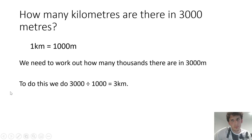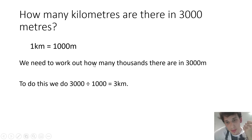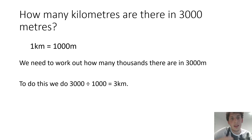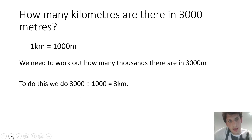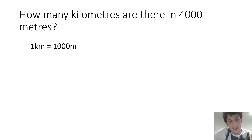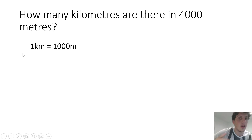Here I have 3,000 meters. One kilometer is equal to 1,000 meters, so to work out how many kilometers there are in 3,000 meters, we do 3,000 divided by 1,000, which equals 3. So in 3,000 meters, there are 3 kilometers. Now you are going to help me — here I have 4,000 meters. I want you to tell me how many kilometers there are in 4,000 meters. One kilometer is equal to 1,000 meters, so please pause the video, complete this task, and then press play when you're ready.